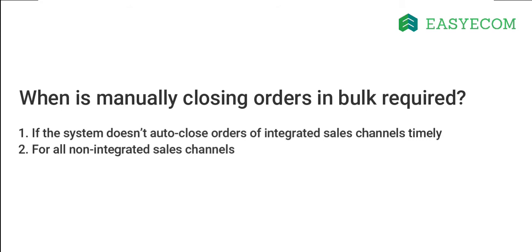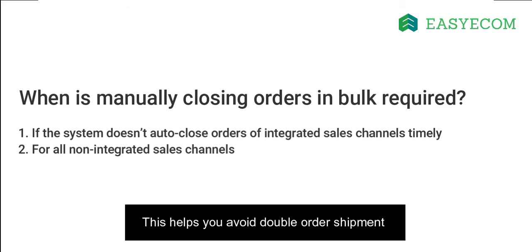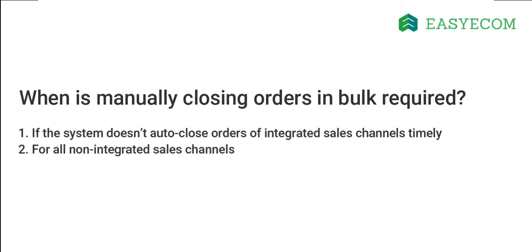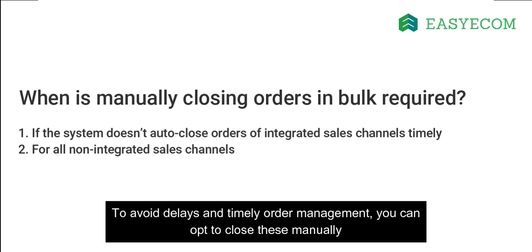The system automatically closes the orders that are processed directly from an integrated sales channel. This helps you avoid double shipment and reduces the inventory count across sales channels, ensuring seamless inventory management. The system, sometimes in a few rare cases, may not close these orders timely. To avoid delays in timely order management, you can opt to close these manually.